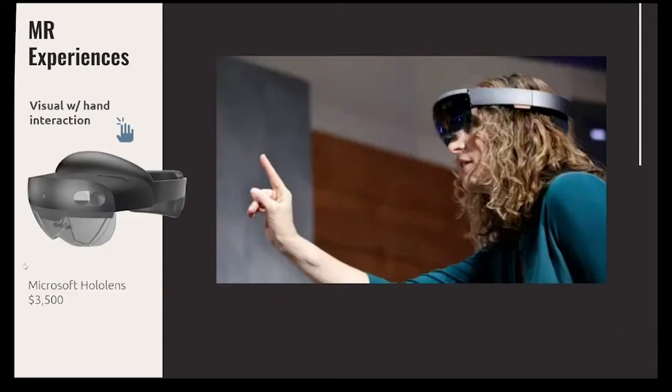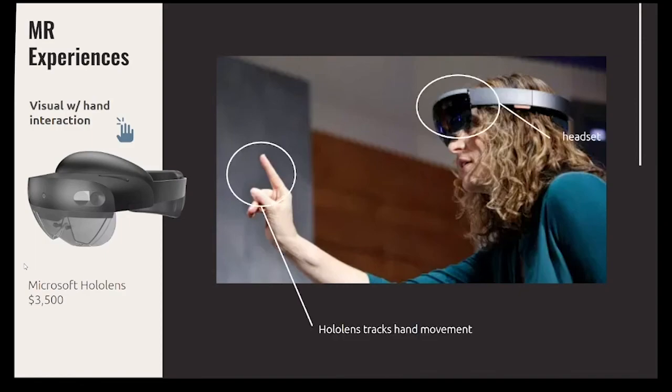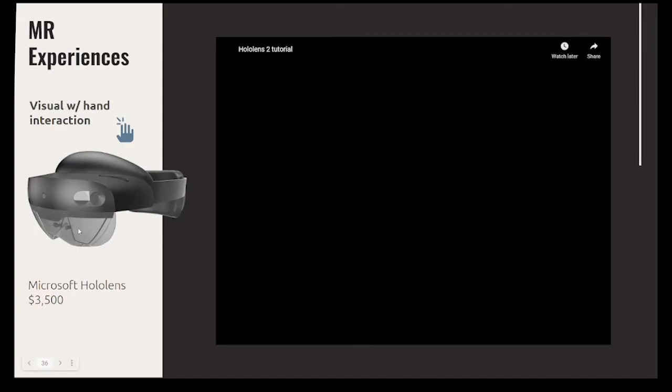The Microsoft HoloLens, unlike the Magic Leap device, can recognize hand movements. You select a hologram or button within arm's reach by tapping it with your finger — that's how you interact with holograms nearby.